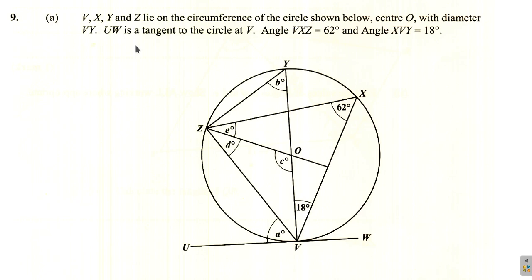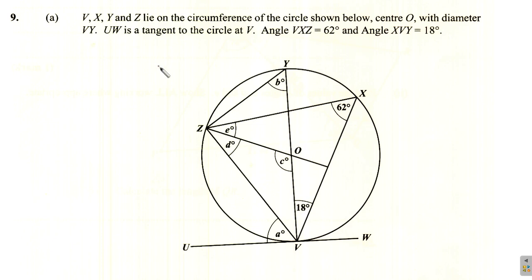Here it says V, X, Y, and Z — those are four points. V, X, Y, and Z lie on the circumference of the circle shown below, with center O. The diameter goes from V to Y.